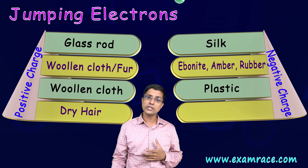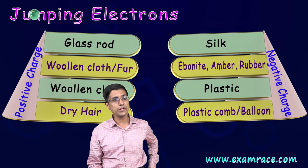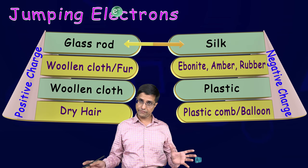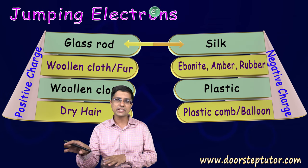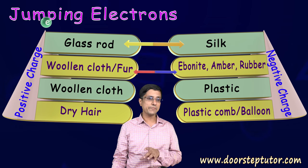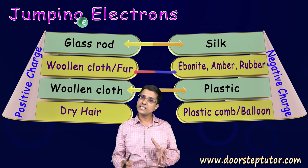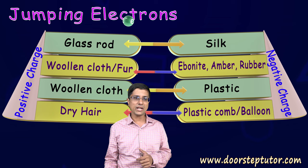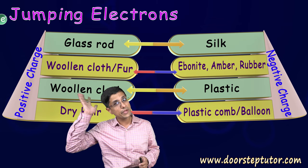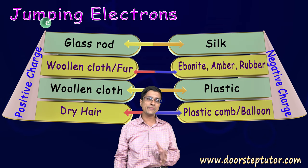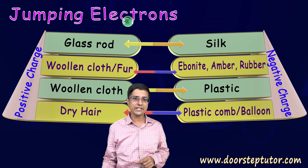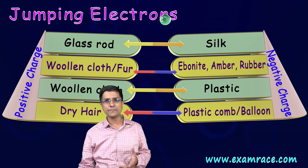These things you have to remember, at least a few, because they can be asked in your exam. Glass rod and silk: if you rub them together, the glass rod becomes positively charged and the silk becomes negatively charged. The same thing happens with woolen cloth and ebonite, amber and rubber, woolen cloth with plastic, and dry hair with a plastic comb or balloon — the hair gets positively charged, electrons are pulled away and stick to the balloon or plastic comb.